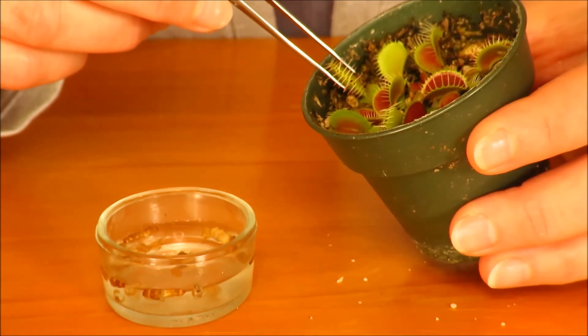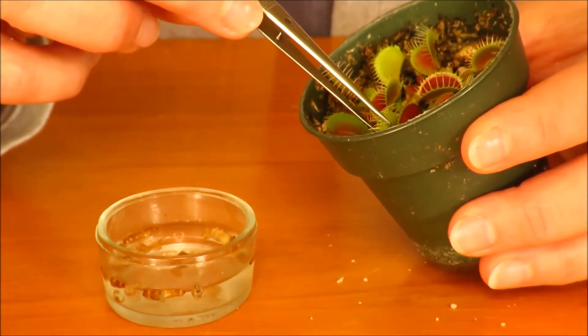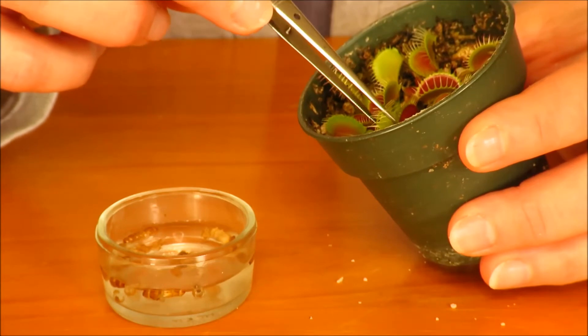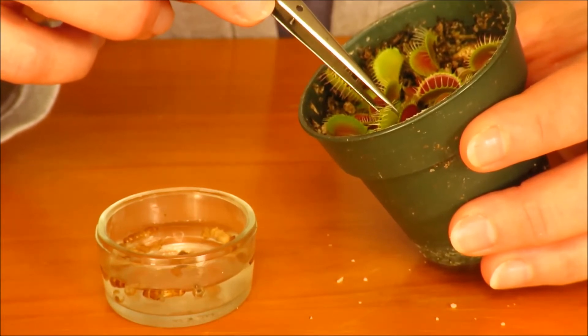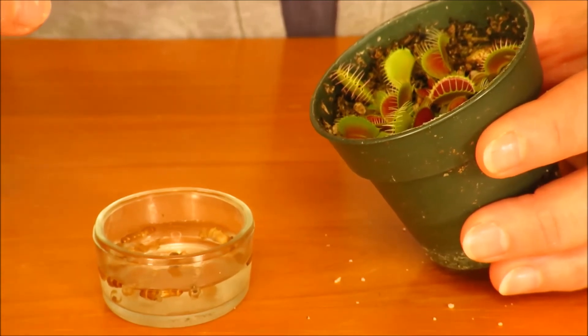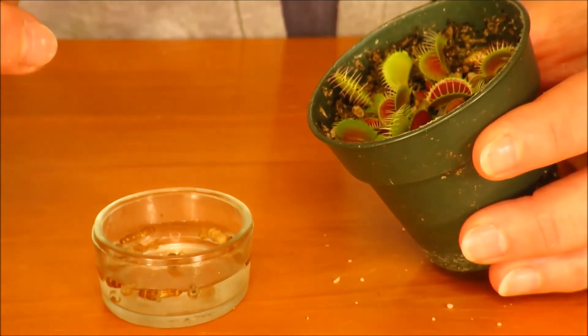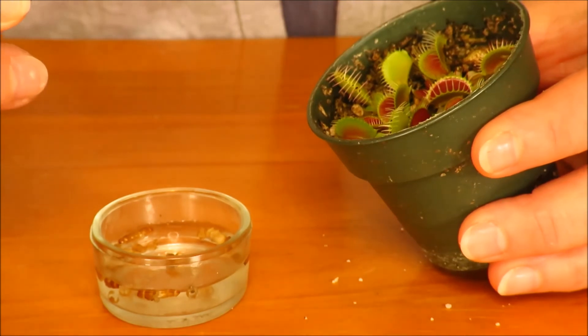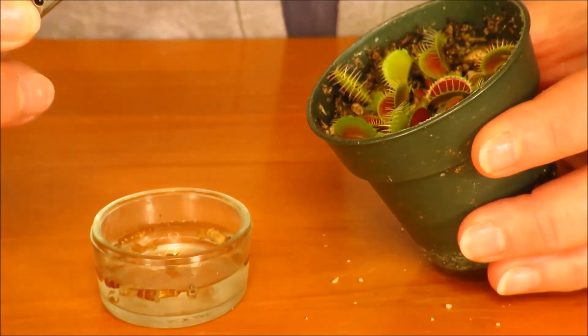It takes at least five triggers actually for the trap before it starts to make the enzymes to digest the insect. Now, some people tell me that they're feeding like ground beef or something to the Venus flytraps, and then they're disappointed that the plants die. Well, that's not the right food for it, right?